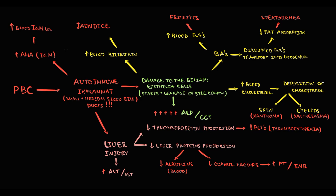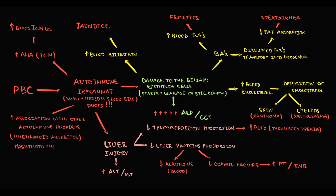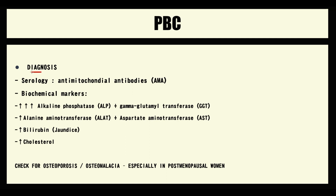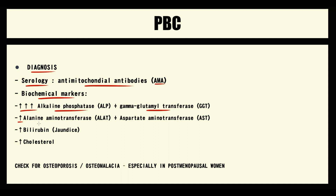As with any autoimmune disorder, primary biliary cholangitis is associated with other autoimmune pathologies, so in patients with rheumatoid arthritis, Hashimoto's thyroiditis, or Sjögren's syndrome the risk is significantly higher. The major diagnostic feature is the presence of antimitochondrial antibodies in the blood. Among biochemical values, markers of cholestasis — alkaline phosphatase and gamma-glutamyl transferase — are of particular interest, along with moderate increases in ALT and AST. Destruction of bile ducts also causes increases in blood bilirubin and cholesterol levels.